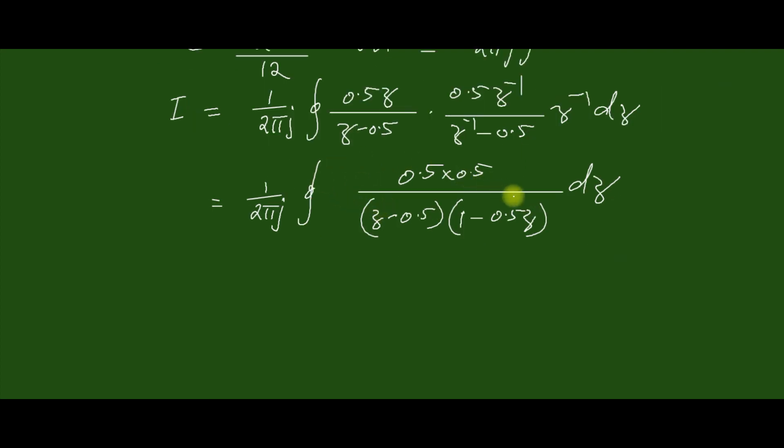So this can be computed by the sum of the residues inside the unit circle. In this case we can see that the poles are at z=0.5 and z=2.